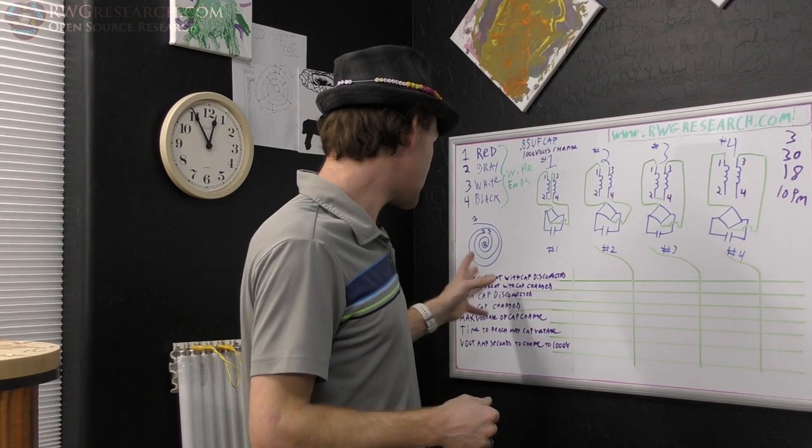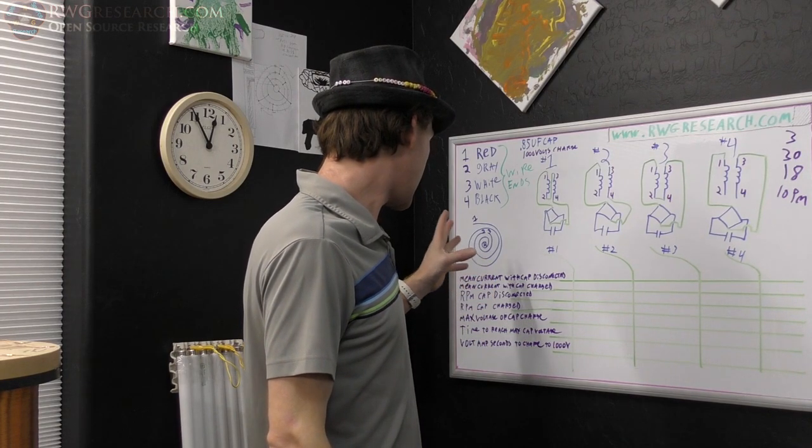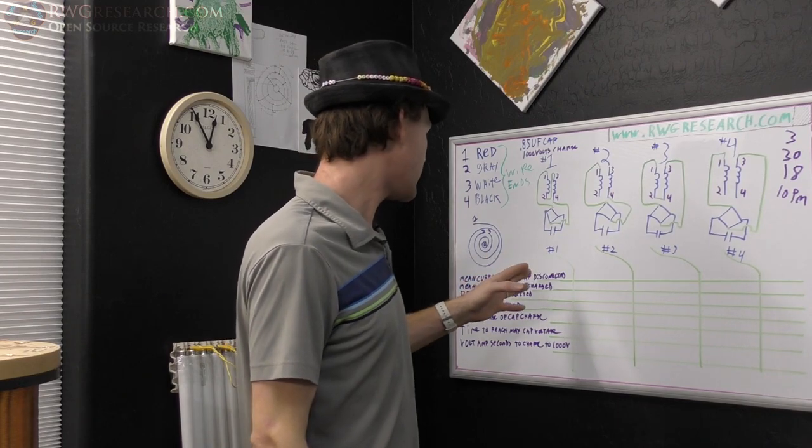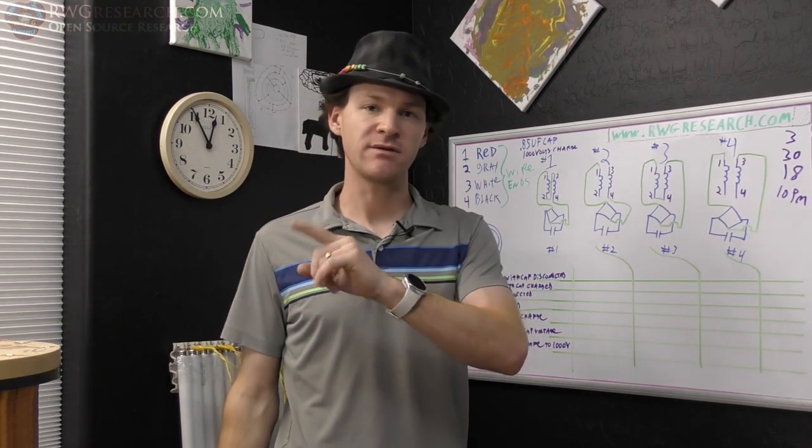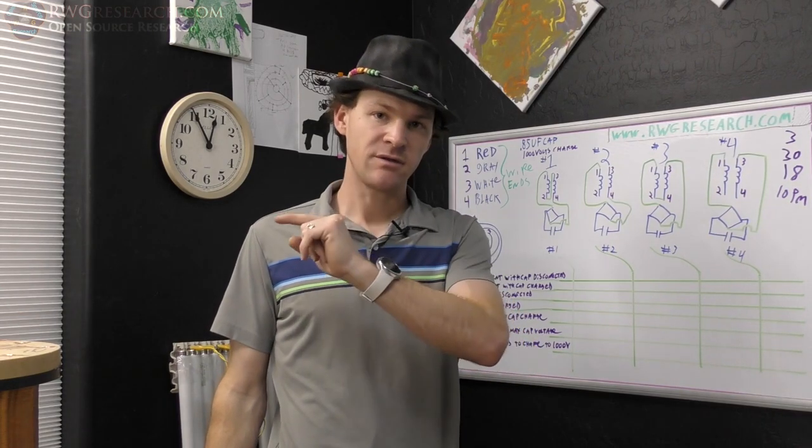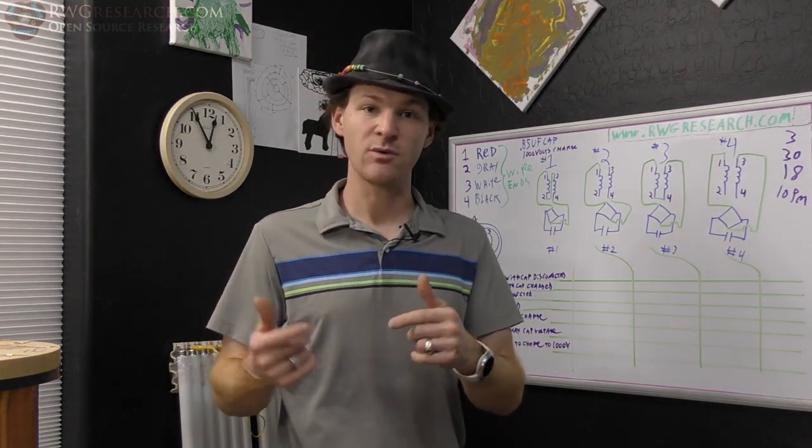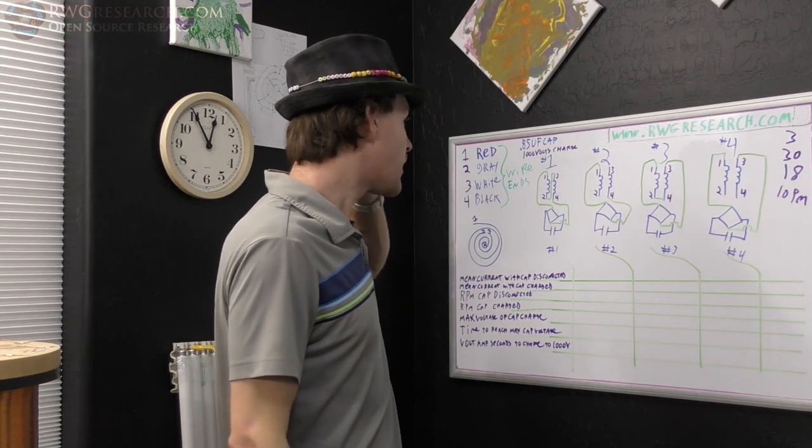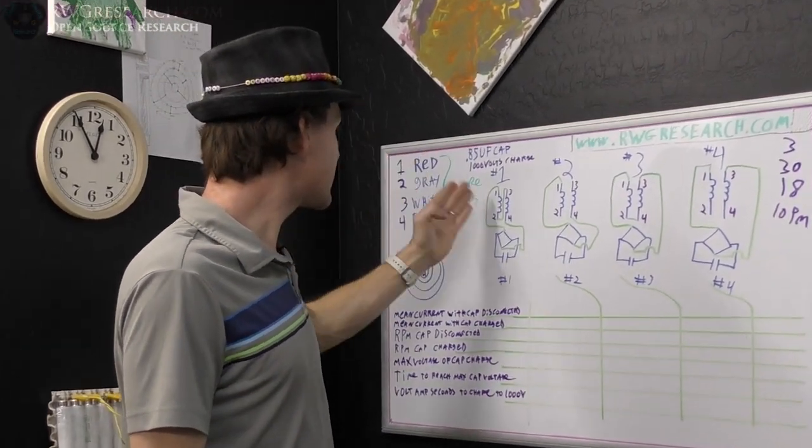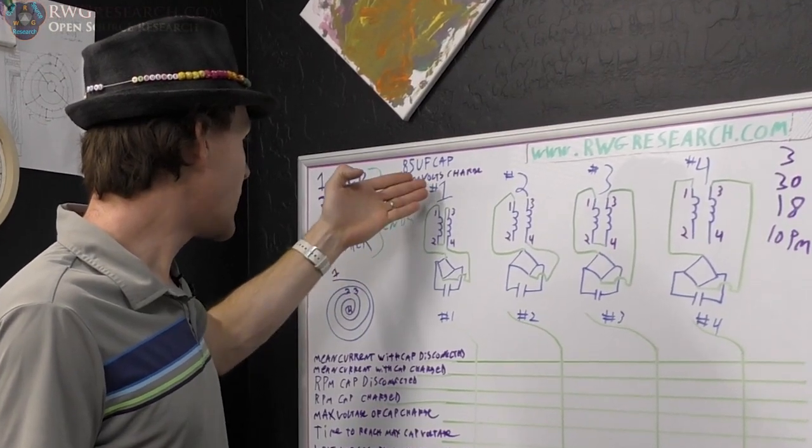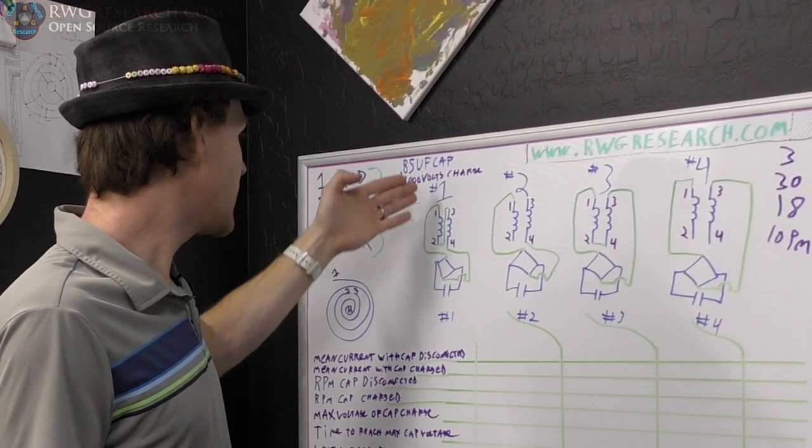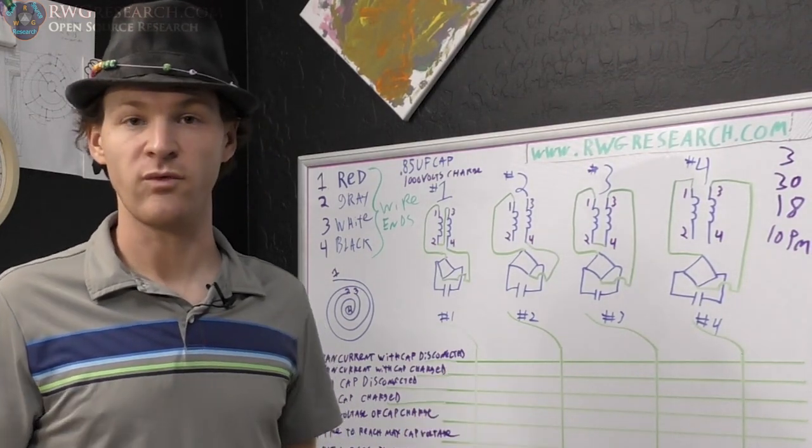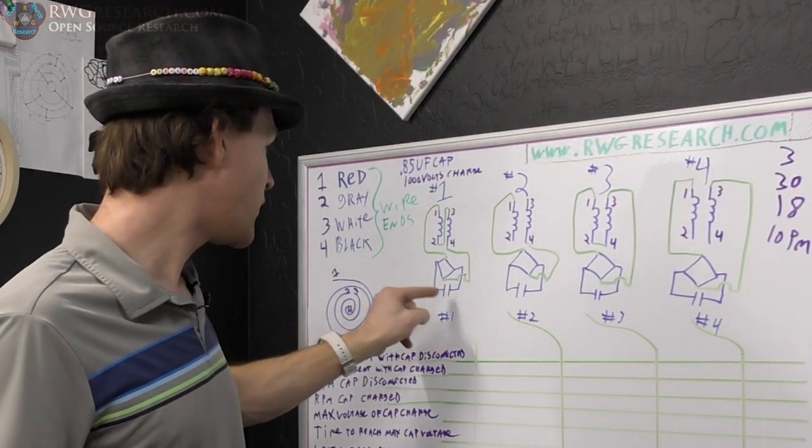So we're picking that charge curve, and we're saying 1,000 volts is what we're using. What I want to do is basically connect the cap with and without, and we have input as a motor running the device. So we're spinning the magnet with a motor, measuring the voltage and current on the input.